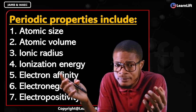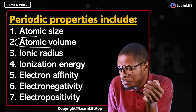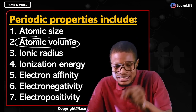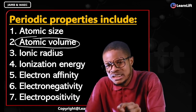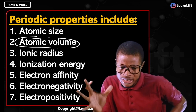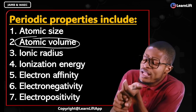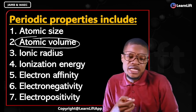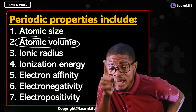Out of these seven, there is one we don't deal with in much detail — atomic volume. We'll just touch on it briefly. But the rest — atomic size, ionic radius, ionization energy, electron affinity, electronegativity, and electropositivity — we are going to look at them in detail. The next class after this will cover atomic size specifically.